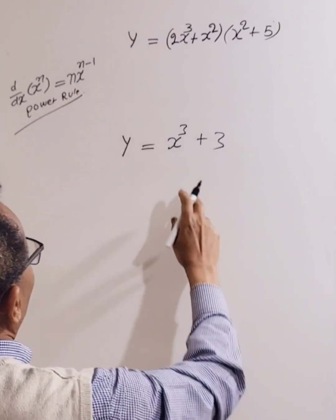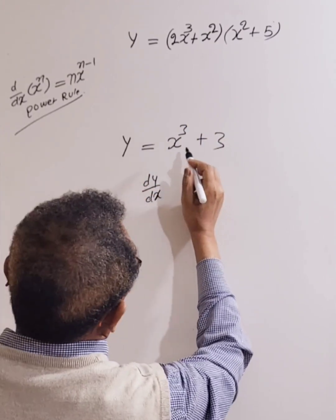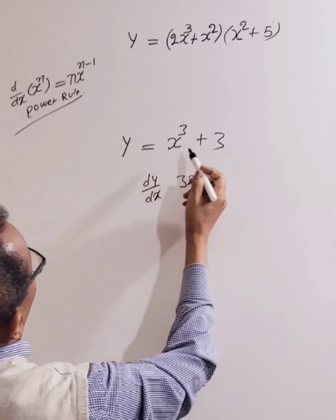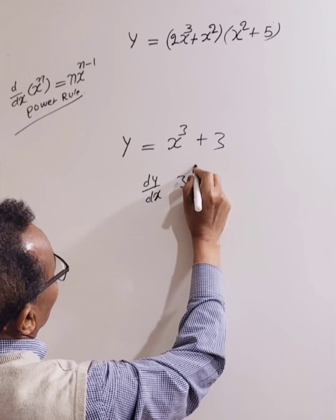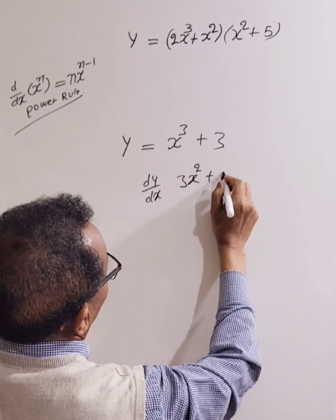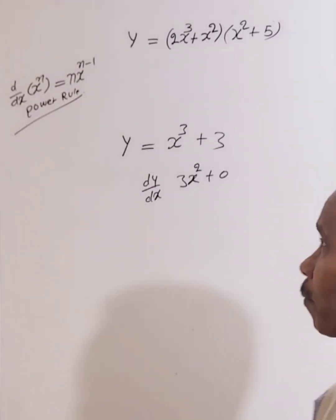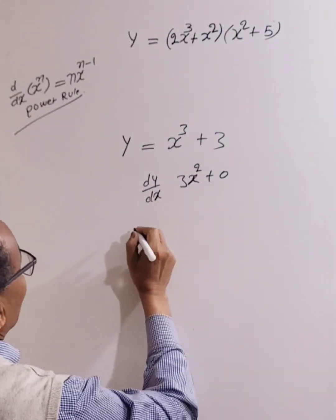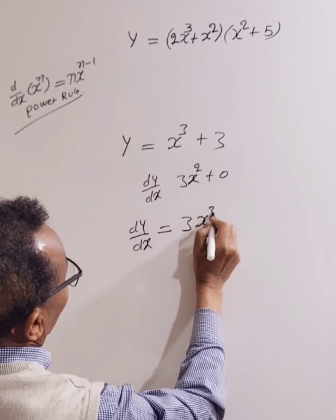So let's apply it here. For y equals x to the power 3 plus 3, dy over dx equals 3 times 1 — because the coefficient of x is 1 — so 3x. Then the exponent decreases by 1, giving us 3x squared. Plus 0, because the derivative of a constant is always 0. So dy over dx is equal to 3x squared.